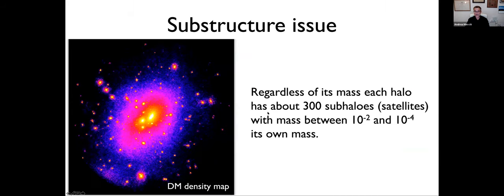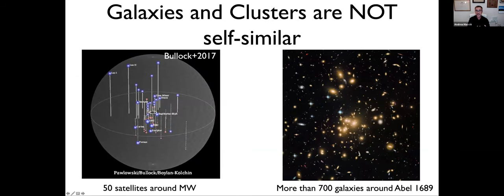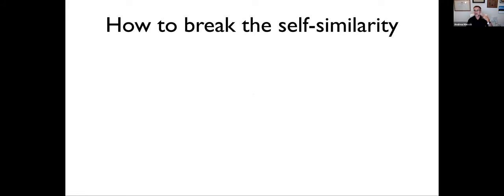The missing satellite problem arises from the same root: dark matter halos always have ~300 sub-structures, but real galaxies are not self-similar. The Milky Way has roughly 50 satellites within its virial radius, while the galaxy cluster Abell 1689 has about 700. You have a self-similar model trying to fit observations that are clearly not self-similar. The solution is to find a way to break this self-similarity.